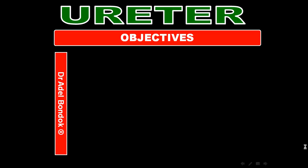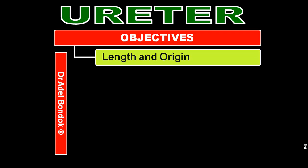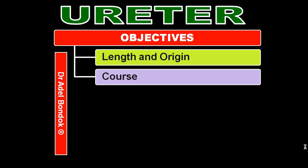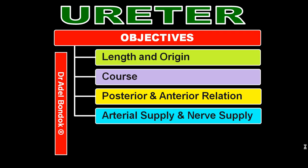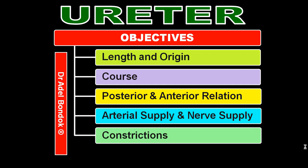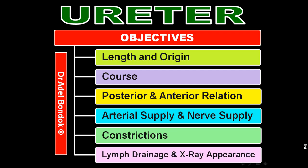Hello everyone! This is Dr. Adel Bondok, Professor of Anatomy and Neuroscience, Mansoura University, Egypt. I will talk about the anatomy of the ureter, covering its length and origin, course, posterior and anterior relations, arterial supply, nerve supply, constrictions, lymphatic drainage, and X-ray appearance.